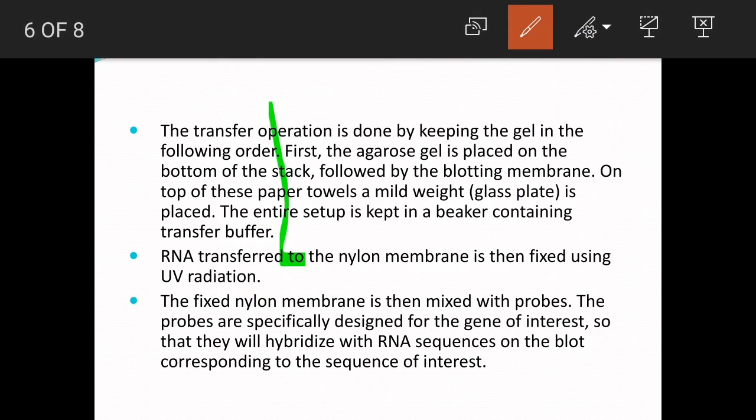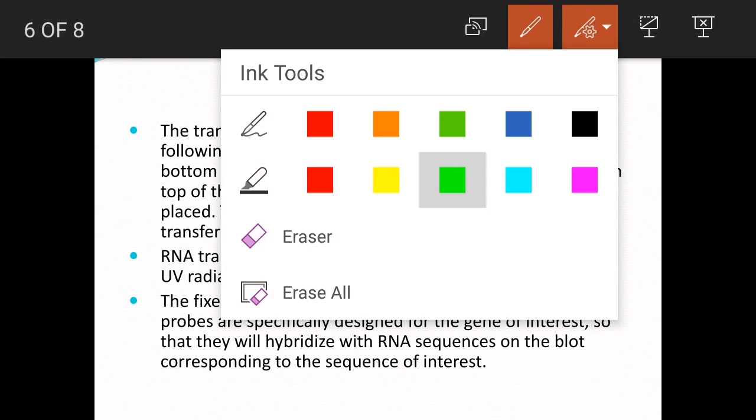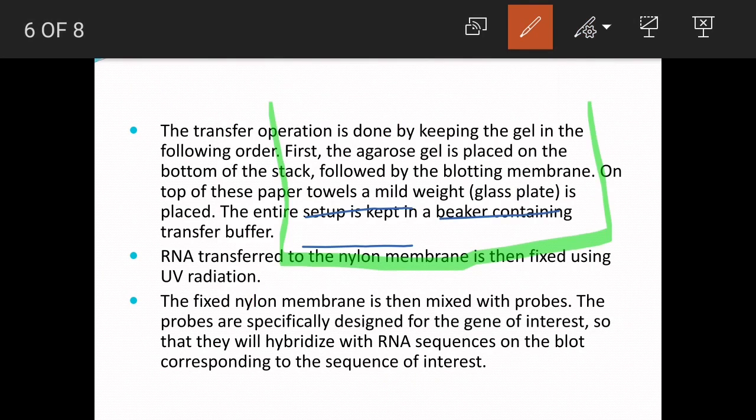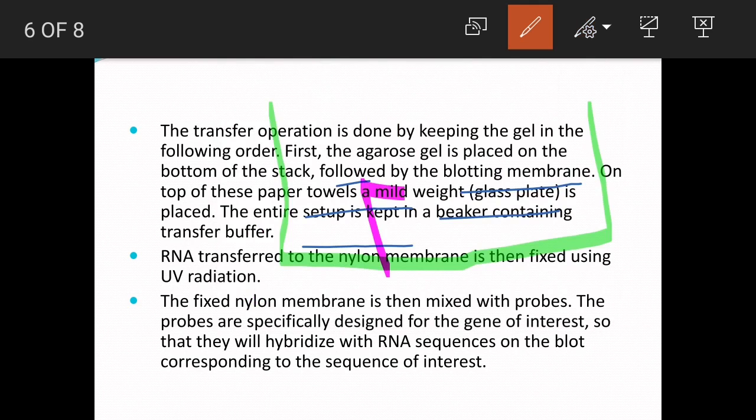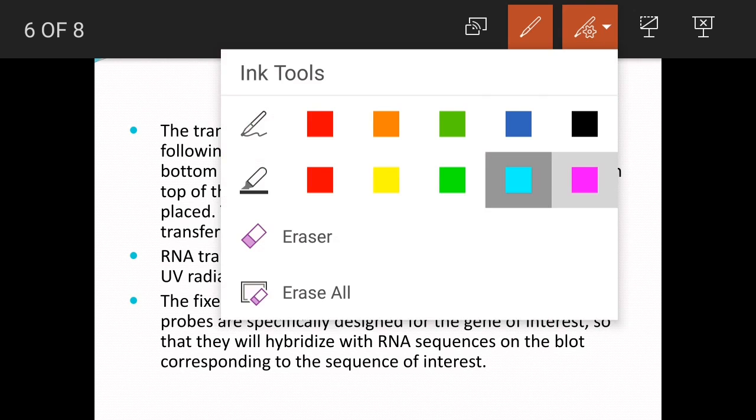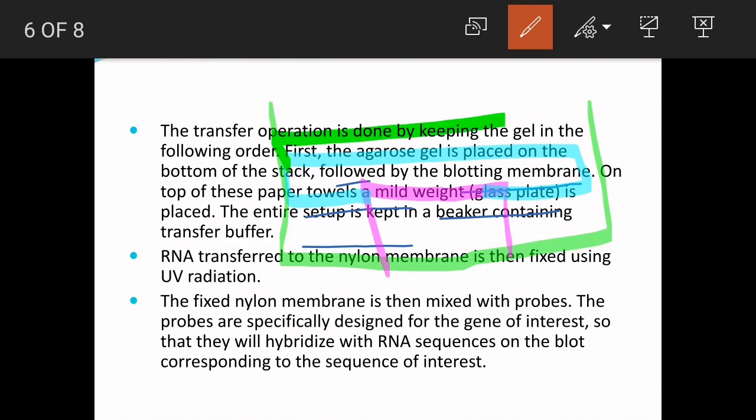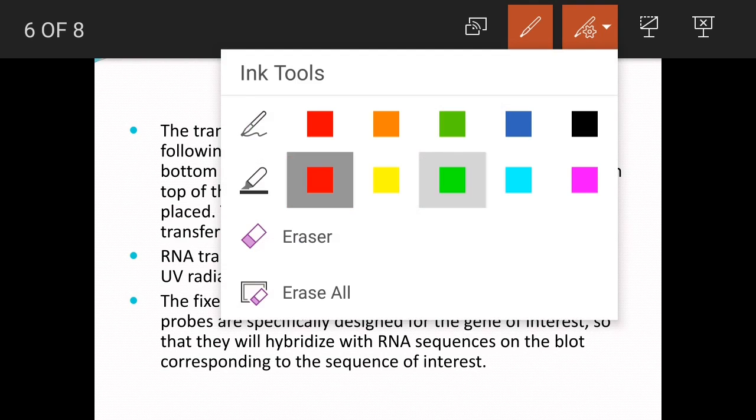First of all, a beaker is present with transfer buffer. We have to put a gel on the beaker where RNA molecules are separated. We have to put a sponge on this gel, then blotting membrane on the sponge, and finally we will keep the weights on it.